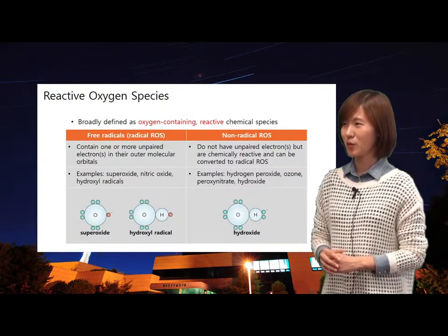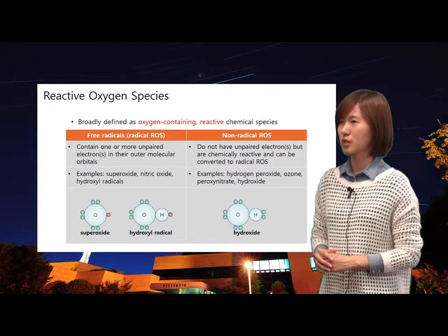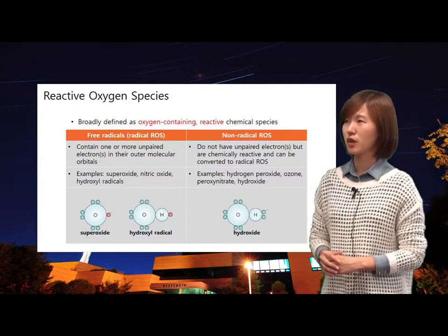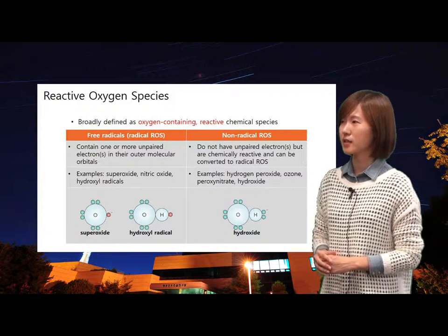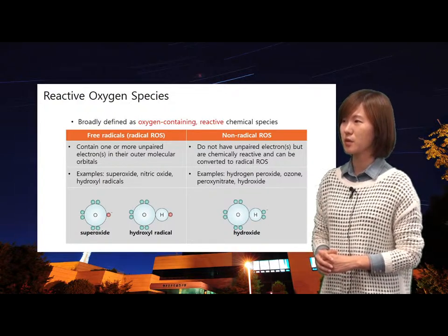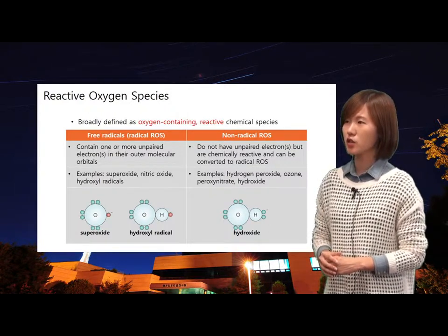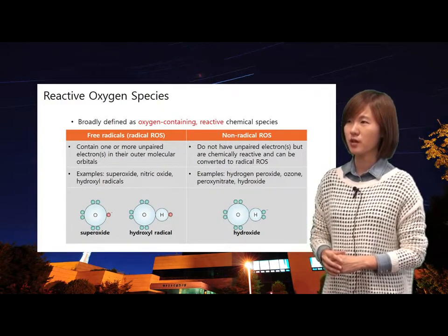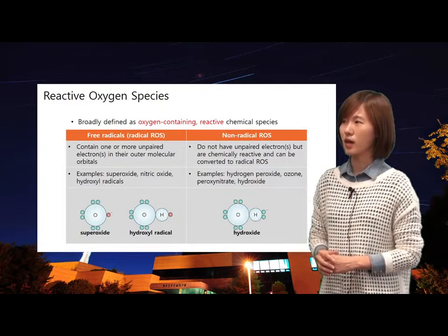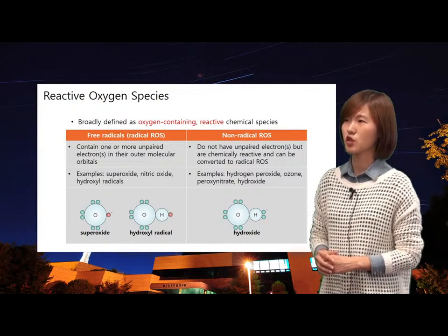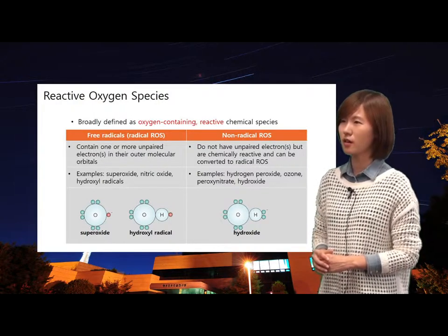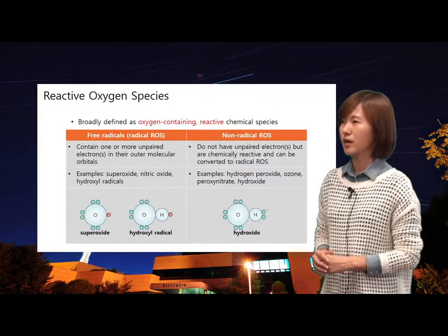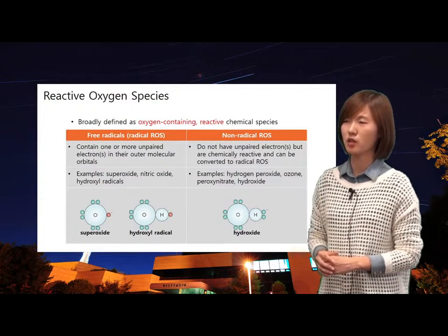I will review important concepts of reactive oxygen species here. Reactive oxygen species are broadly defined as oxygen-containing reactive chemical species. There are two kinds of ROS: one is free radicals, which have unpaired electrons — you can see red dots as unpaired electrons in superoxide and hydroxyl radical. The other is non-radical ROS, which does not have unpaired electrons.